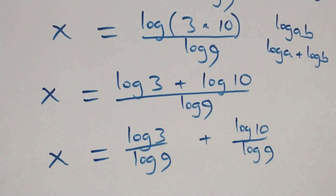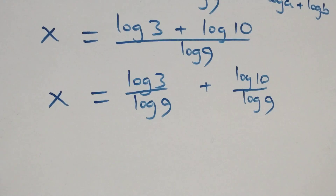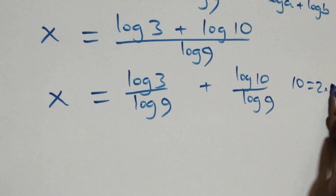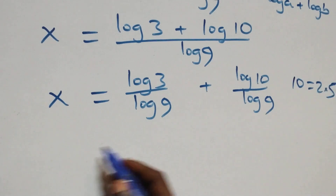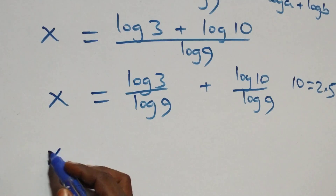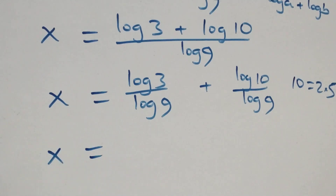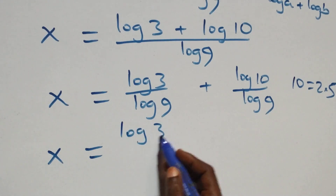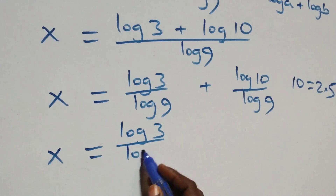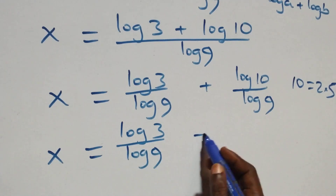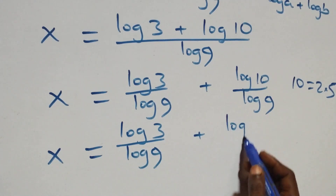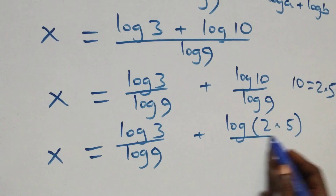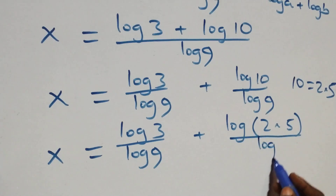Let's take a look at log 10. In the next step, we can also rewrite 10 as 2 times 5. Which implies we have x equals to log 3 over log 9 plus log(2 times 5) over log 9.